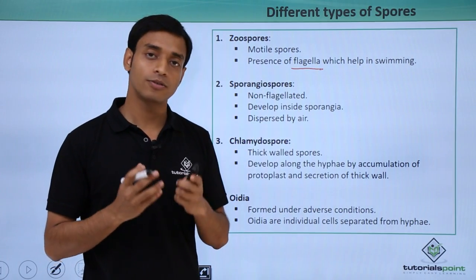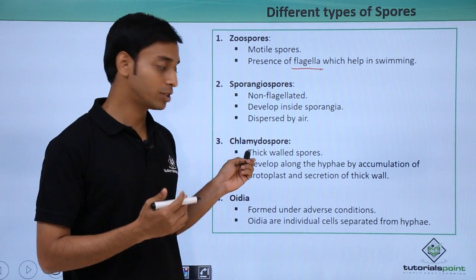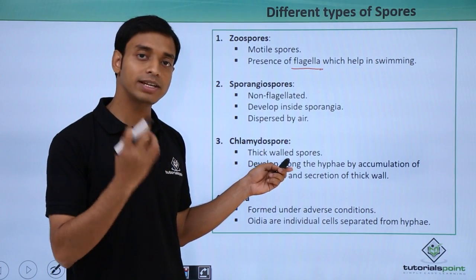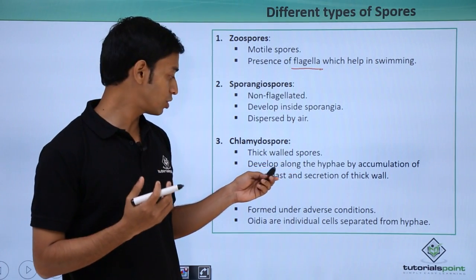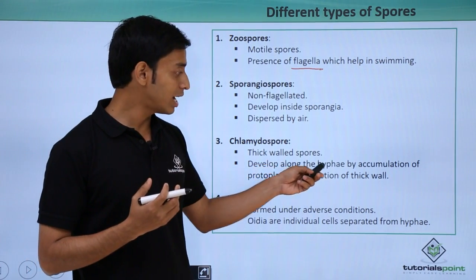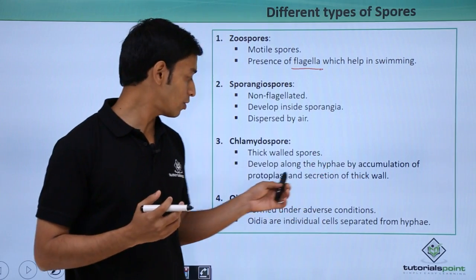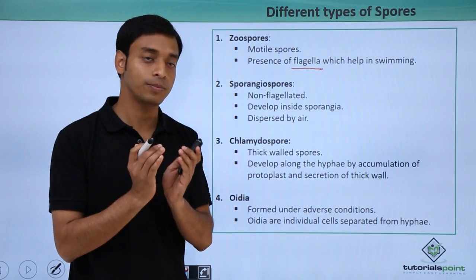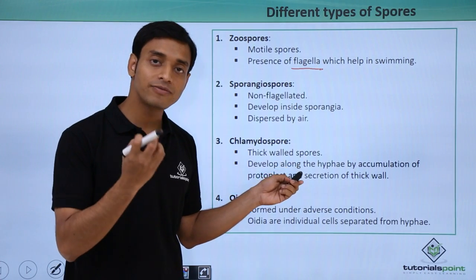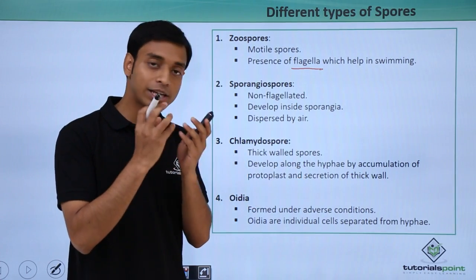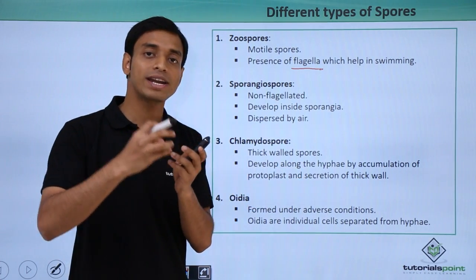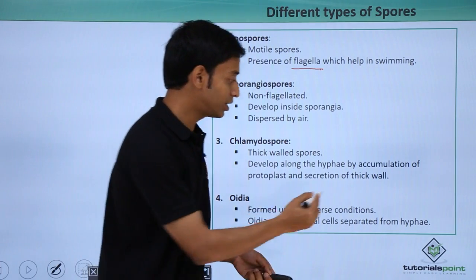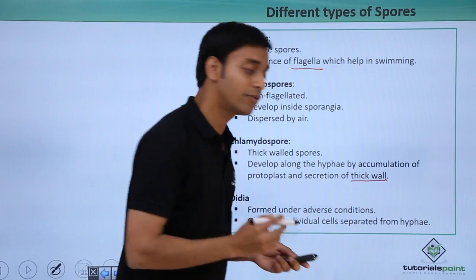The next type is chlamydospores. These are very thick-walled spores and are very resistant structures. They develop along the hyphae by the accumulation of protoplast and the secretion of a thick cell wall. The protoplast accumulates at one end of the hyphae, resulting in the secretion of a thick wall, making it a resistant structure.